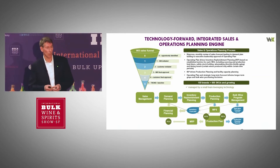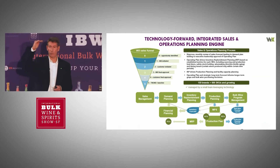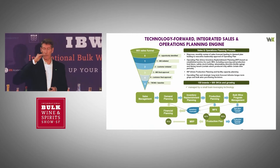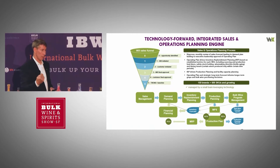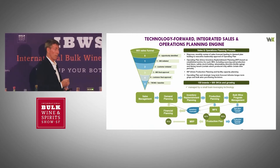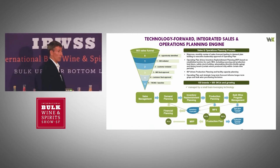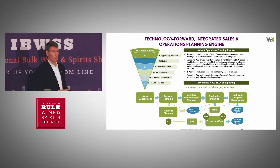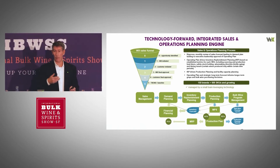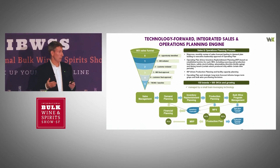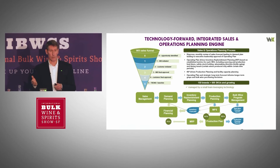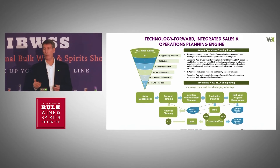What we historically see is a sales forecast here, a demand plan here, and then the leadership group on a monthly basis evaluates the demand plan, the sales forecast, decides how much risk we're willing to accept, and we create an operating plan.